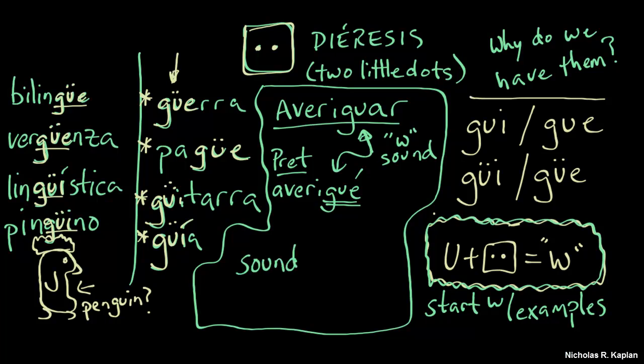So we have averiguar, that guh sound in the infinitive. So we need to maintain that with box one. So we're going to put two dots on the U and get averigüé.